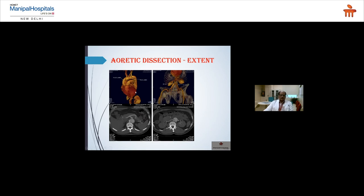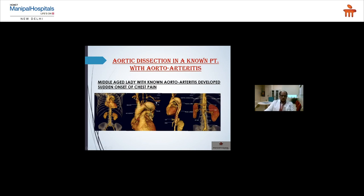Case examples: Type I dissection involving the innominate artery, extending to the common iliac arteries, with the celiac axis and left renal artery arising from the false lumen — posing risk to renal perfusion. Type II dissection case with aortoarthritis showing complete narrowing of the left common carotid artery — presenting with severe chest pain; CT demonstrated Type II dissection extending to the distal aorta.